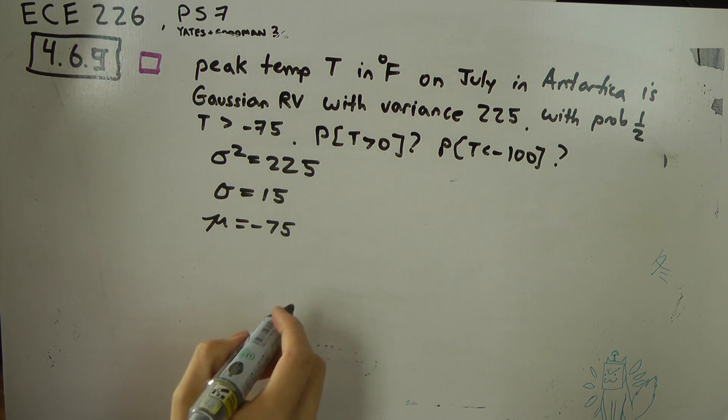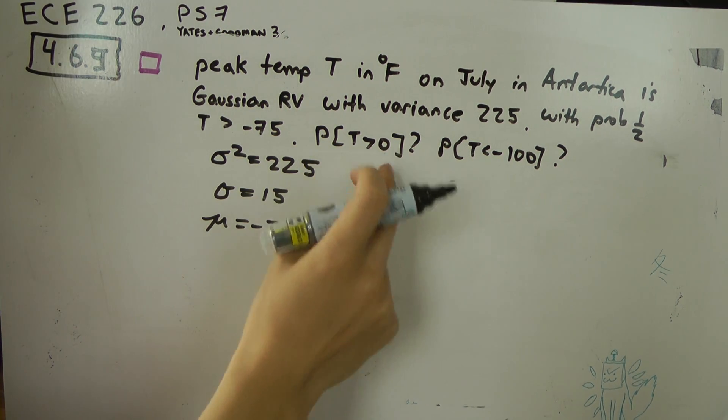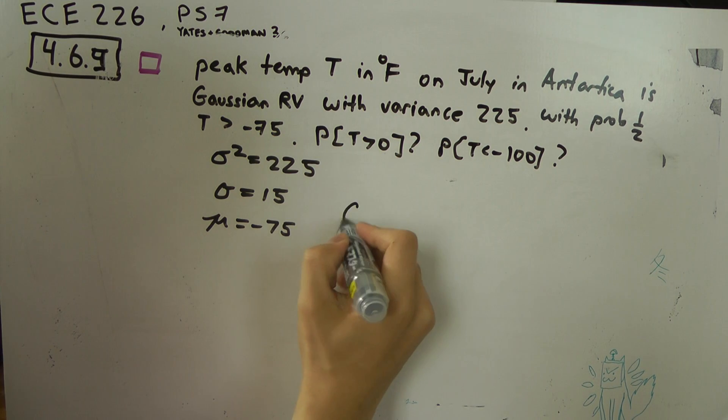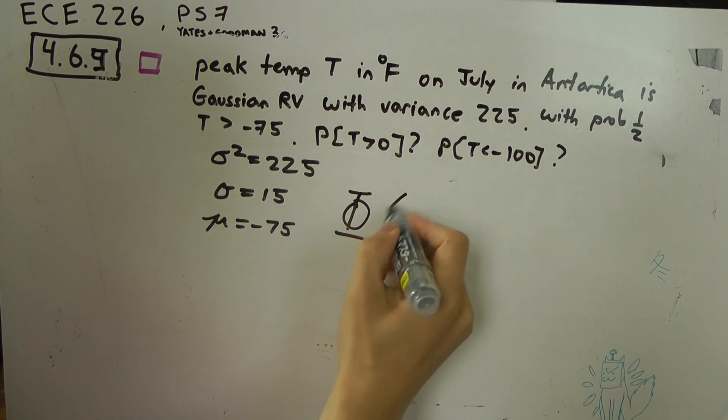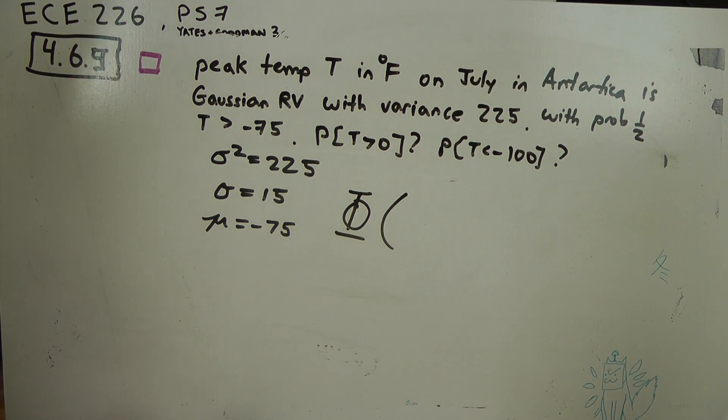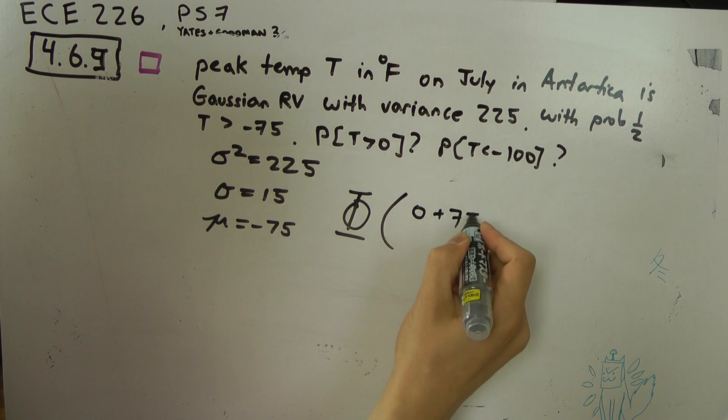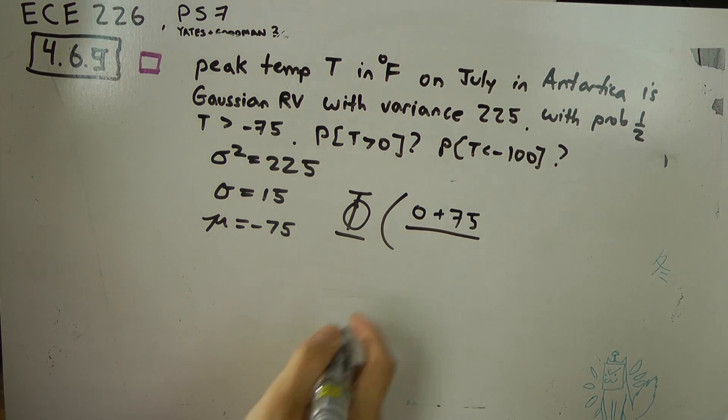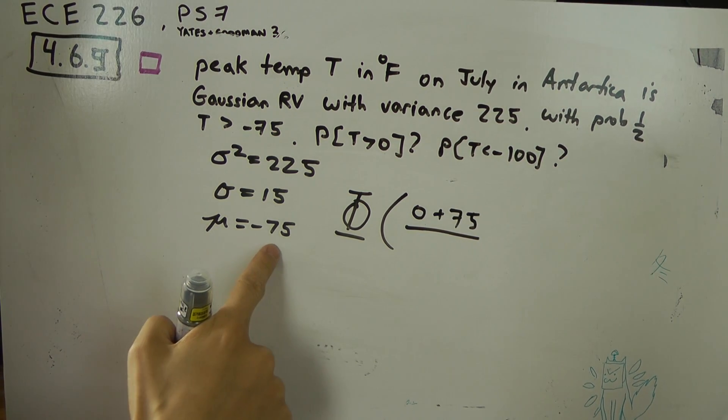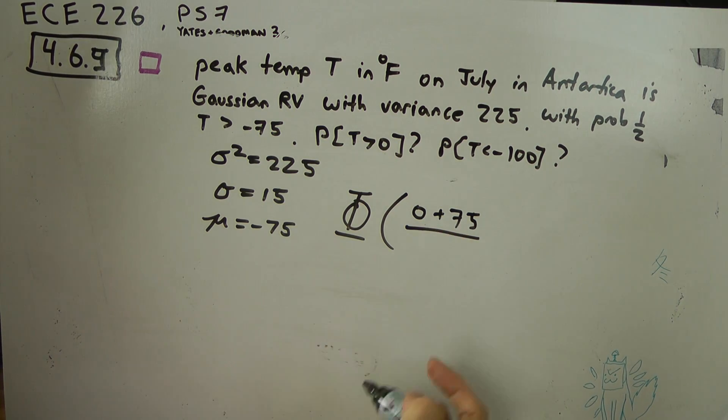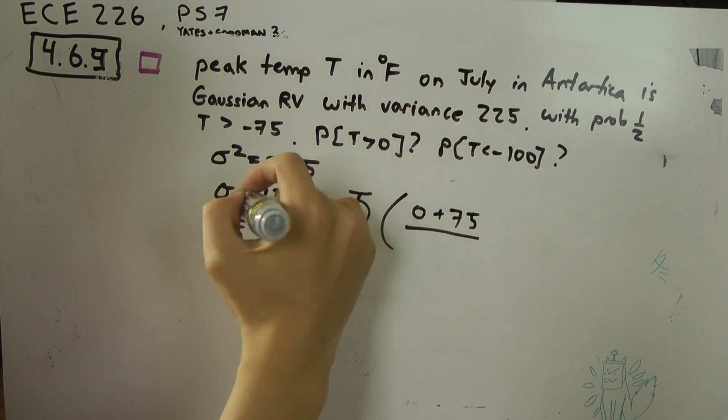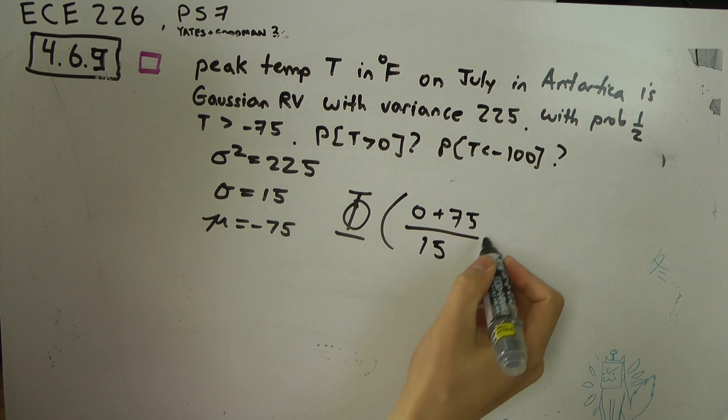So now we need to find the probability that T is greater than zero. We can use the big phi, the standardized cumulative Gaussian function. So zero, then we have to normalize it by subtracting the mean. So minus 75 minus minus 75 becomes plus 75. And then divide by the standard deviation.